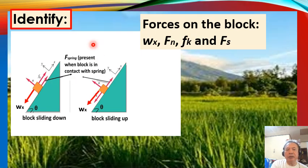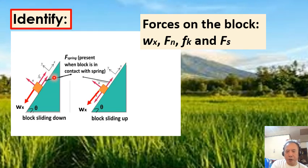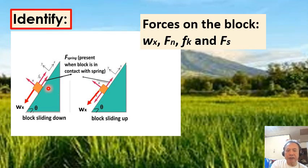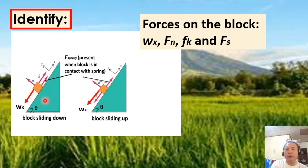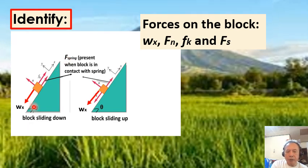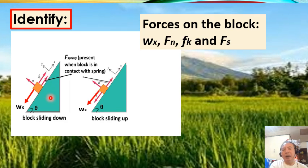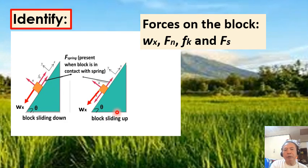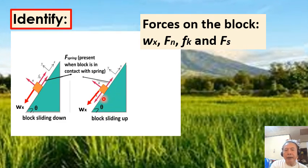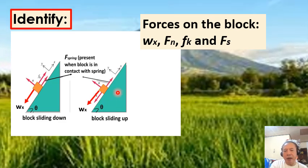The other force acting on the block is the force of kinetic friction. The direction of this kinetic friction is always opposite to the motion of the block. So while the block is moving down, the kinetic friction is directed up the incline. But when the block rebounds and moves up the incline, the direction of the kinetic friction is down the incline.